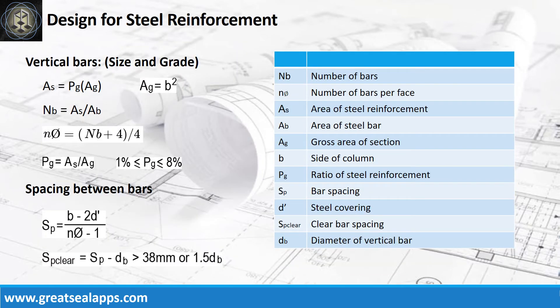Solve the area of steel from the steel ratio and gross area of section to get the number of vertical bars, followed by the number of bars per face. Then get the spacing between bars and check the clear spacing between bars.